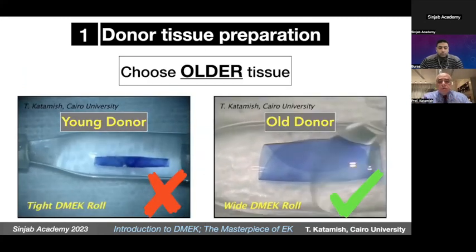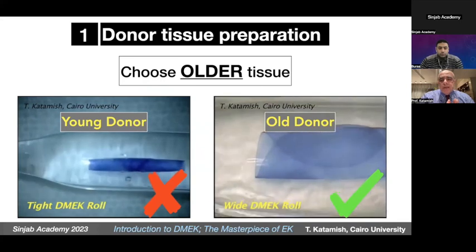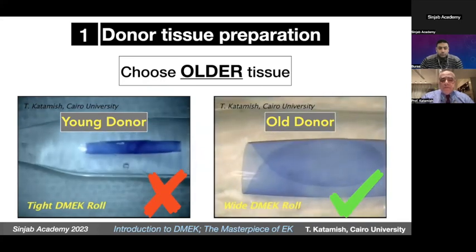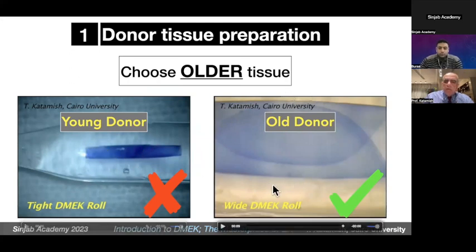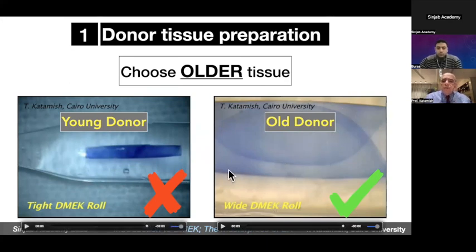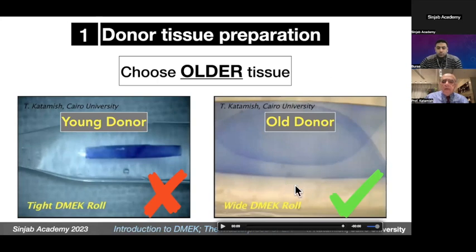A key piece of advice: choose older donor tissue for DMEK graft preparation. A young donor produces a very tight roll, while an older donor produces a wide roll. The wide roll behaves very friendly in the anterior chamber and unfolds very easily, compared to the tight roll. So you must choose an old graft.